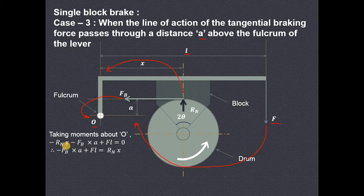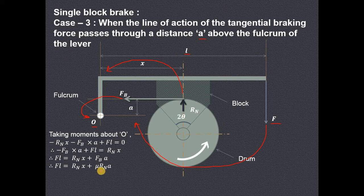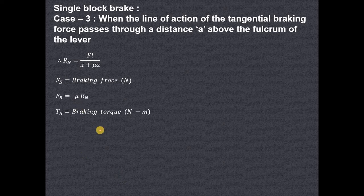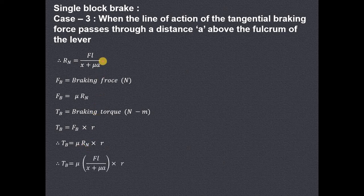Transferring the negative Rn times X term to the other side makes it positive, and transferring the negative FB times A term to that side also makes it positive. Substituting FB equals mu times Rn and taking Rn common gives (X plus mu·A). So normal reaction Rn equals FL divided by (X plus mu·A). Applying the same concept: braking force is mu times Rn, braking torque is braking force times R. Substituting the value of Rn as FL divided by (X plus mu·A), we obtain the braking torque. In this way we can apply the concepts of mechanics to the analysis of the single block brake.